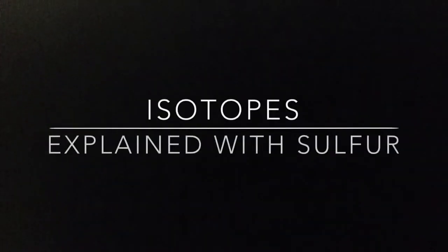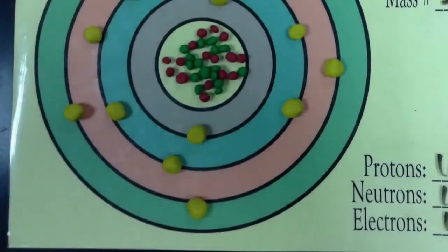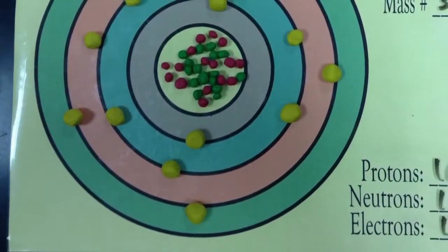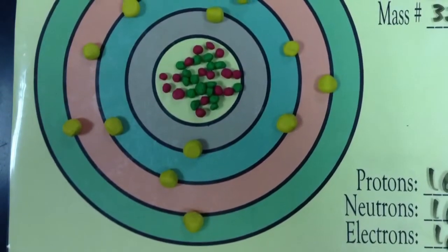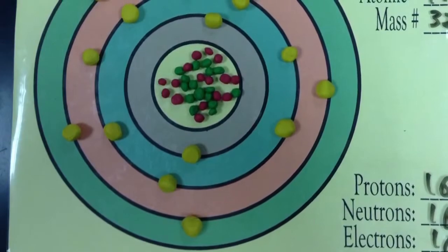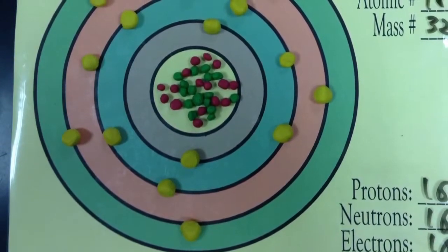Here we will explore true facts about sulfur isotopes. All atoms contain protons and neutrons. While protons in the atomic nucleus determine what kind of element the atom is, neutrons do not.